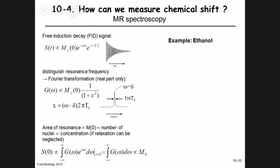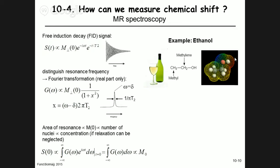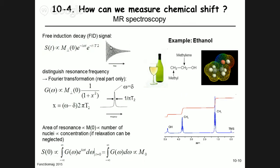Let's do an example with ethanol — appropriate given we're surrounded by vineyards. Ethanol has a methyl group (CH3), a methylene group (CH2), and an OH group. Here you can see the carbons, oxygen, and hydrogens in the chemical structure. Taking the signal from a sample of pure ethanol and Fourier transforming it gives us a spectrum g(ω).